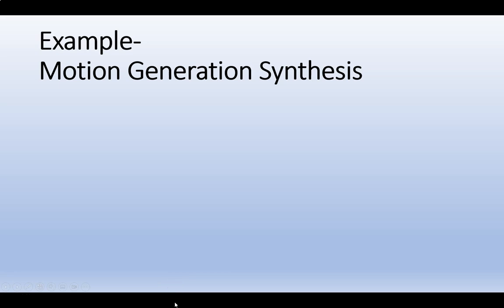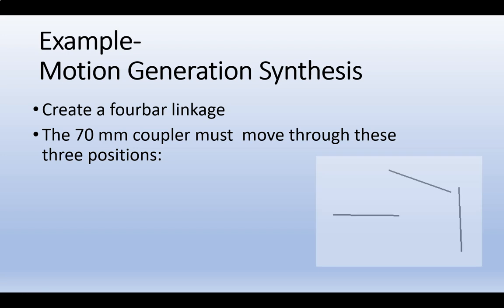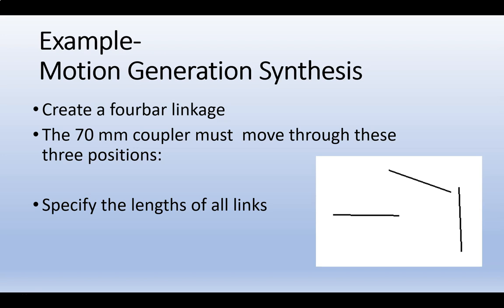In this video we're going to look at a motion generation synthesis of a four-bar linkage. We'll have a 70 millimeter coupler that must move through three positions. We'll specify all the link lengths and then determine the Grashof condition.